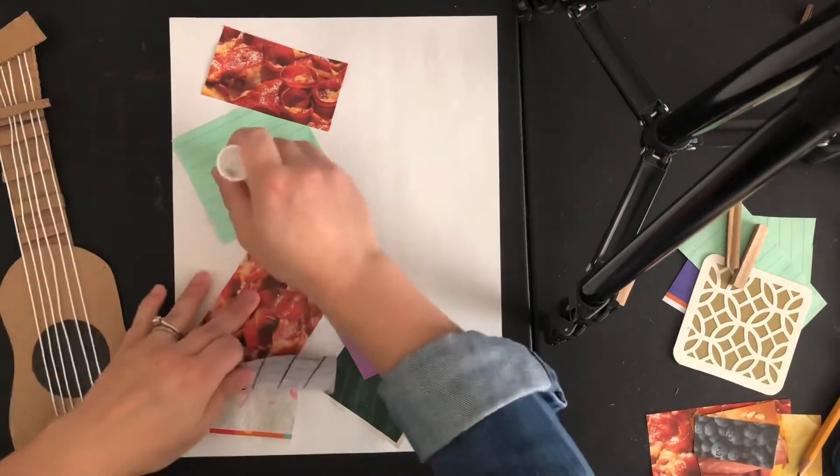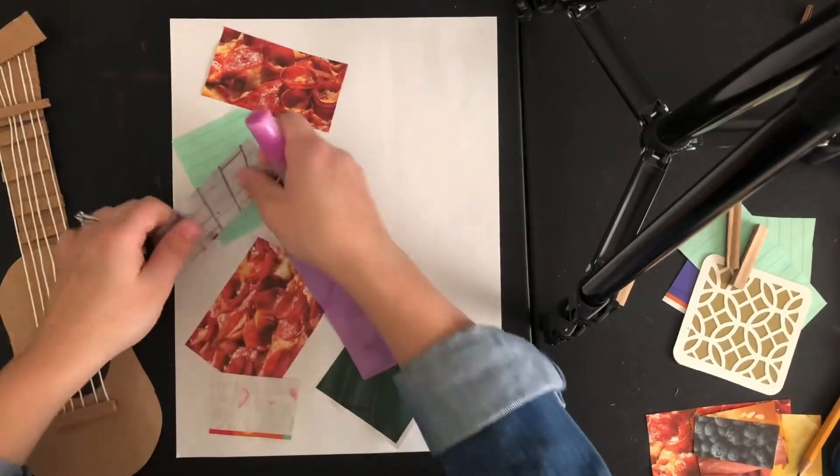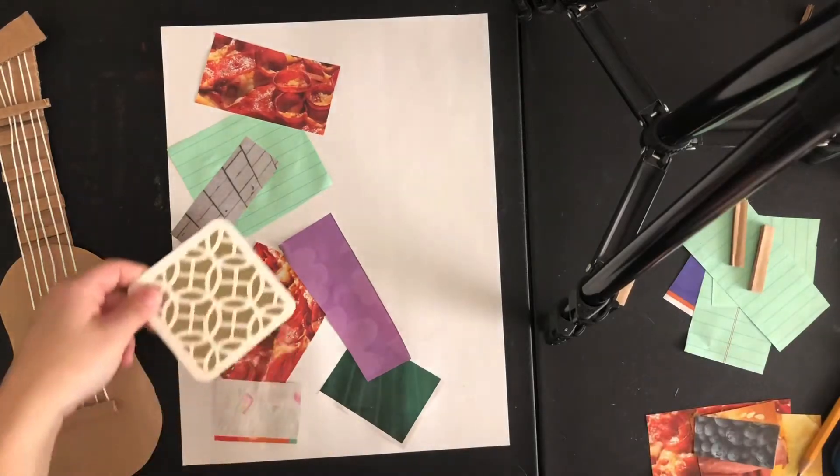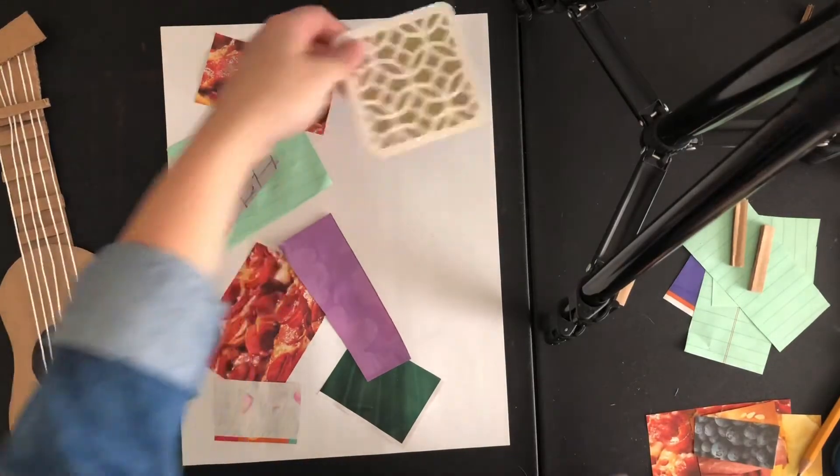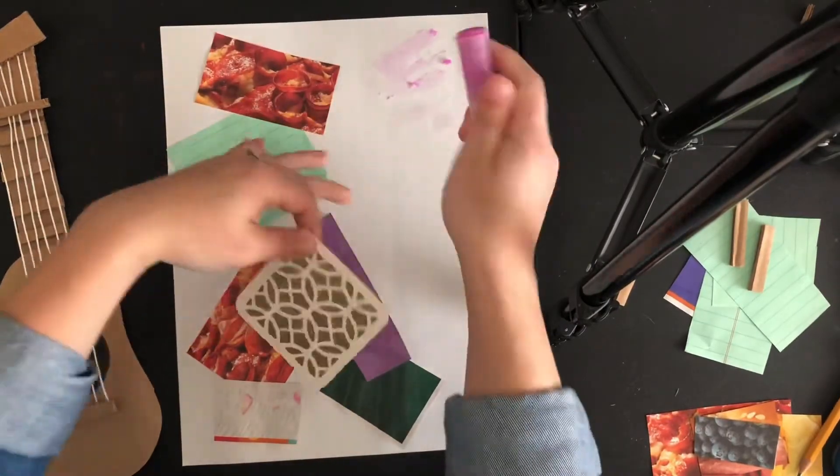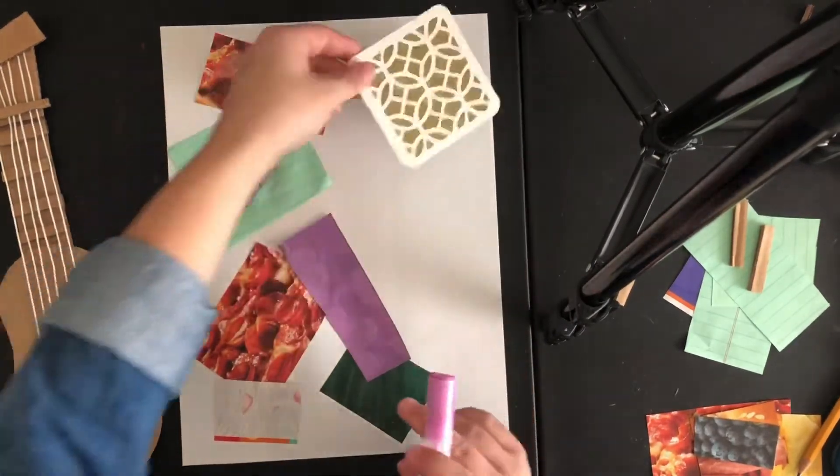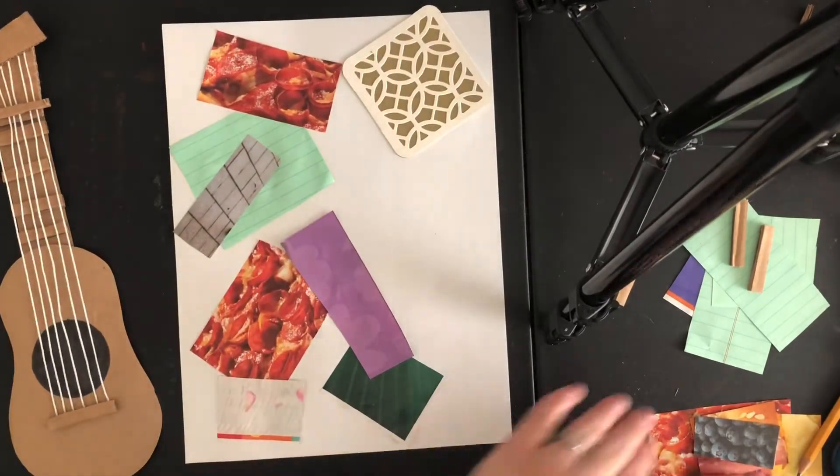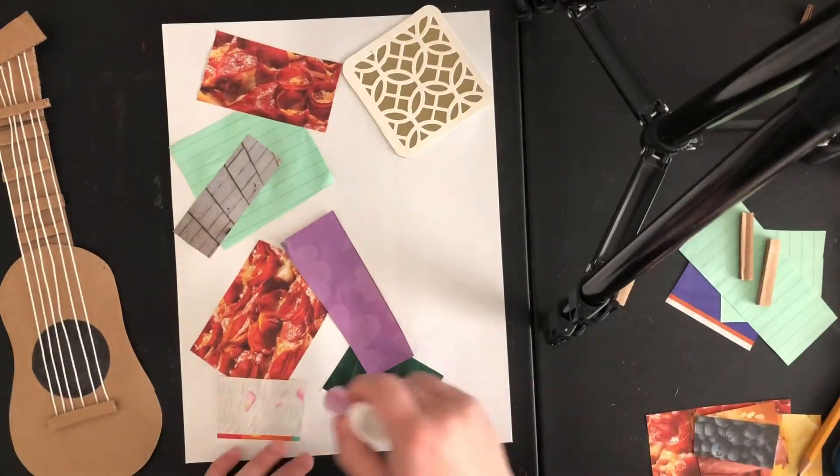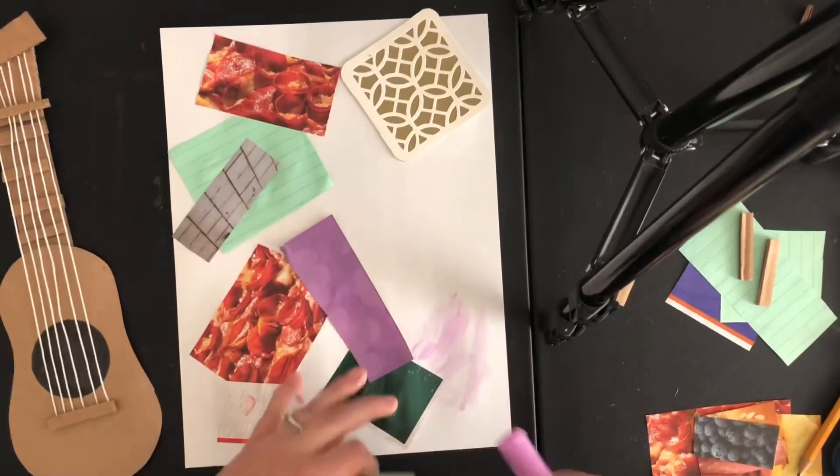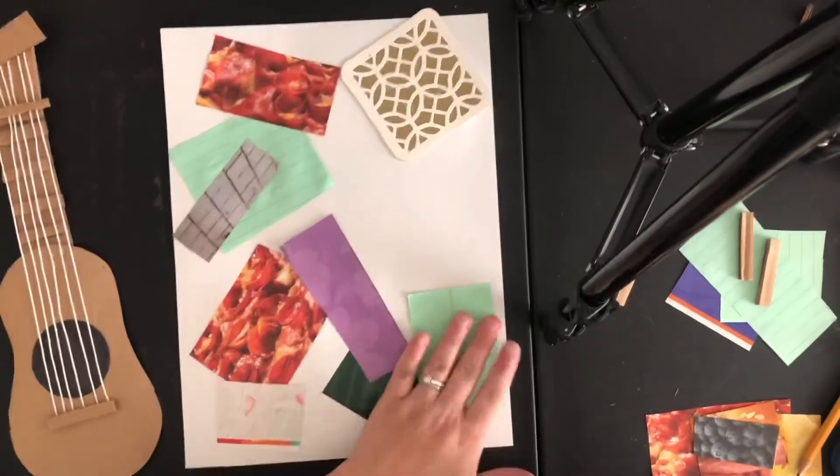And this is adding some different shapes and texture and designs. I also used some pieces from an old card. So ideally you do want some glue for this, but if you don't have glue at home, you can just lay your paper down and piece it together kind of like a puzzle and then take a picture of it.